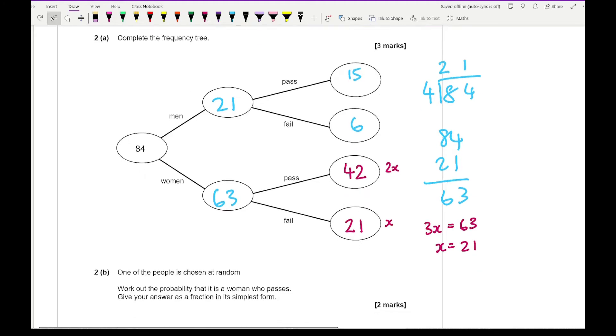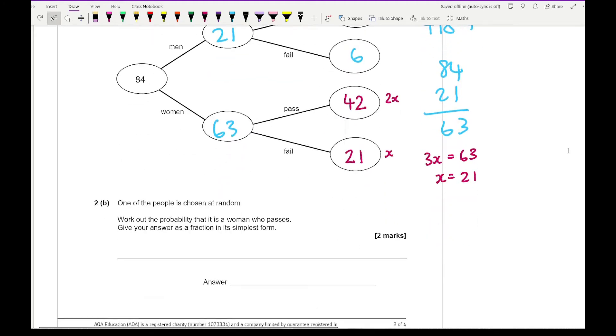Now the next question says, one person is chosen at random, work out the probability that it is a woman who passes. Give your answer as a fraction in its simplest form. So here we're looking for a woman that passes, which is 42, out of 84. And if I then go on to simplify that, I get 21 over 42. And I can then divide that further, which gives me a half.